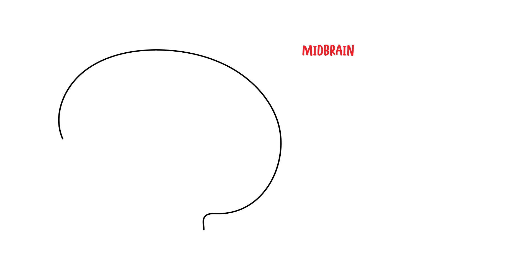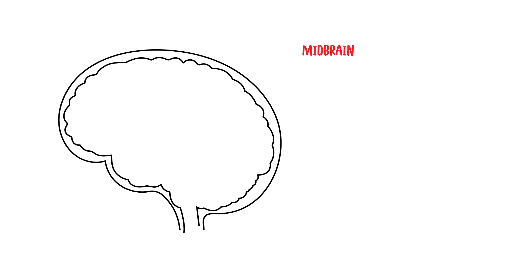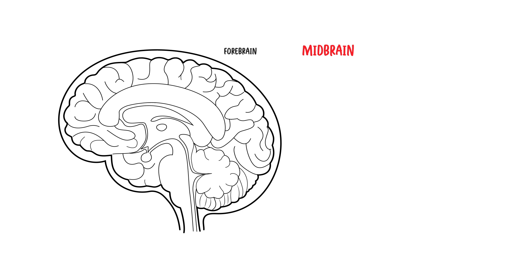Hello, in this video we're going to talk about the anatomy of the midbrain. The midbrain, or the mesencephalon, is one of the three regions of the brainstem, the others being the pons and the medulla.